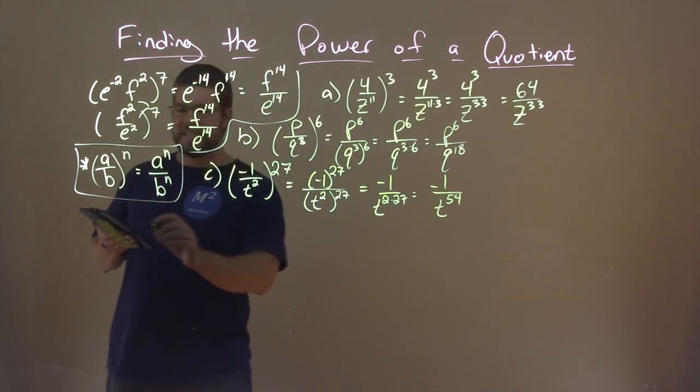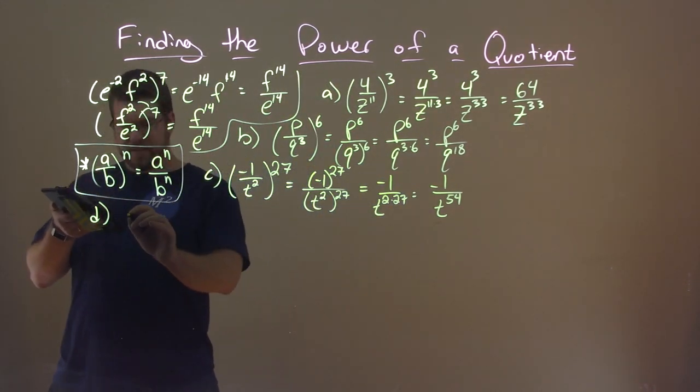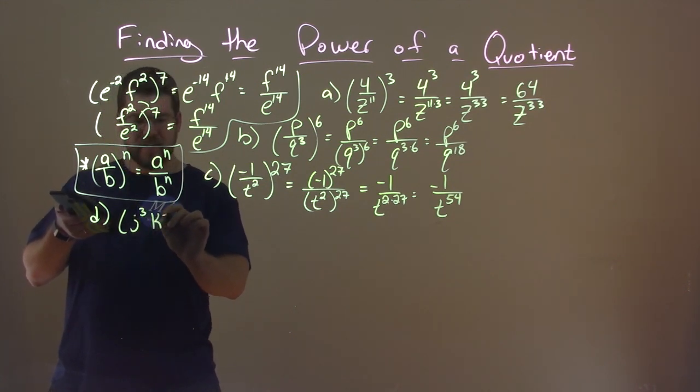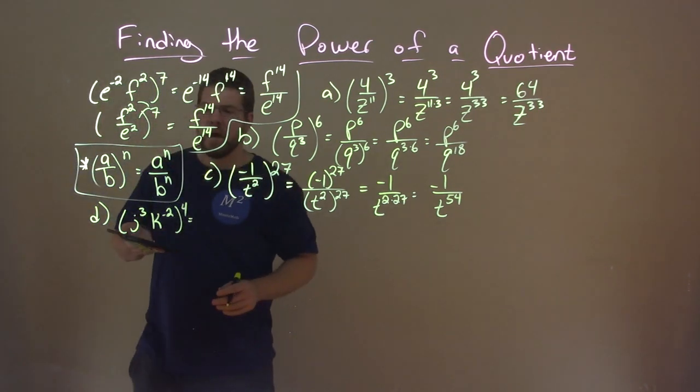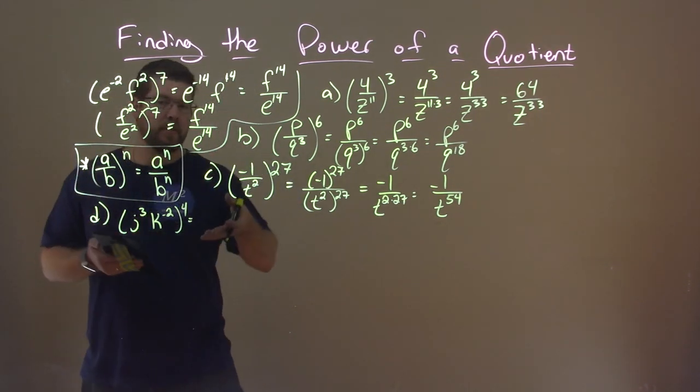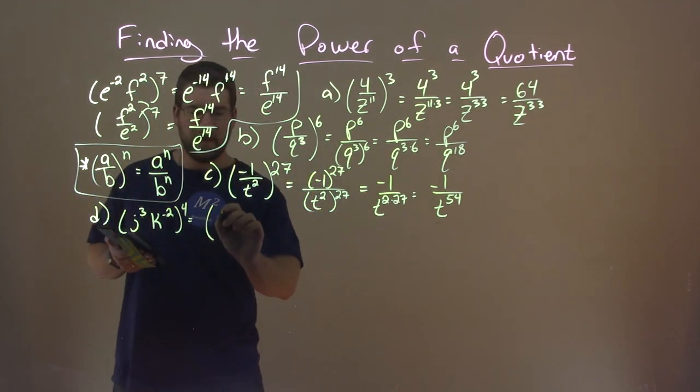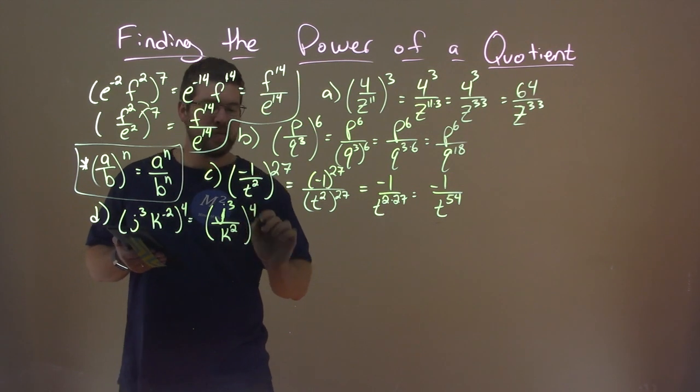Let's go with d here. Now, d is j to the 3rd, k to the negative 2 power, all to the 4th. Now, we know that with a negative exponent, right, we can make it positive by going to the denominator. So we have j to the 3rd over k to the positive 2 power, all to the 4th power.